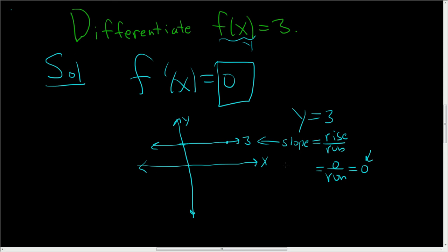The derivative is the slope, therefore the derivative is 0. So whenever you have a constant function, the derivative is 0. Why? Because the derivative is the slope, and constant functions have a slope of 0.